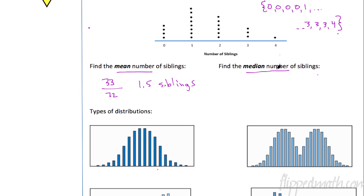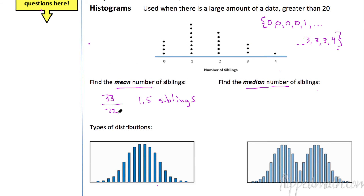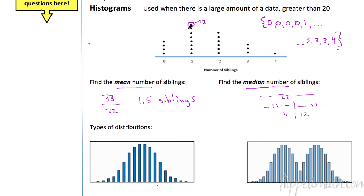For the median: when you count all the points up, there are 22. Since there's an even number, there's no single middle — you have 11 on one side and 11 on the other. So the 11th and 12th values are added and divided by 2. Counting through the dot plot: four zeros, then ones — the 11th and 12th values are both ones. One plus one equals two, divided by two is one. The median number of siblings is one.